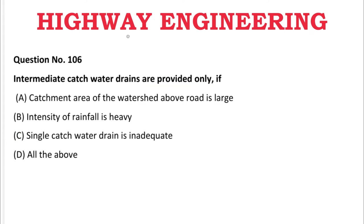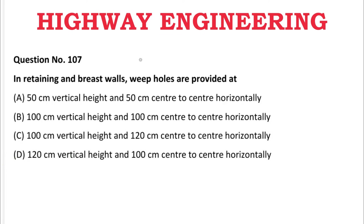Next question: Intermediate catchwater drains are provided only if — A: catchment area of the watershed above the road is large, B: intensity of rainfall is heavy, C: single catchwater drain is inadequate, D: all the above. The correct answer is D, all the above.